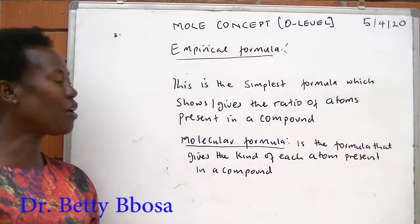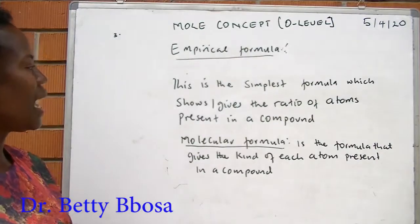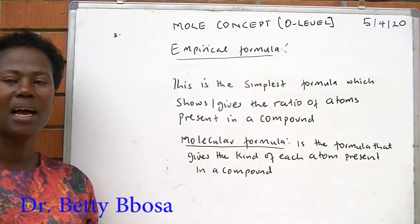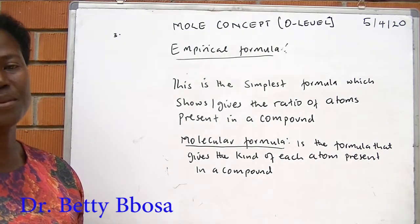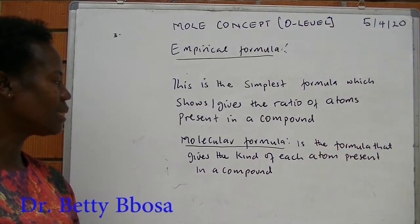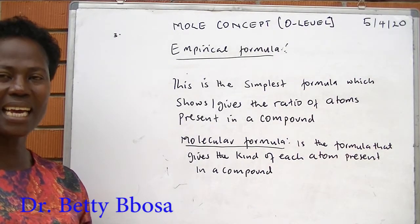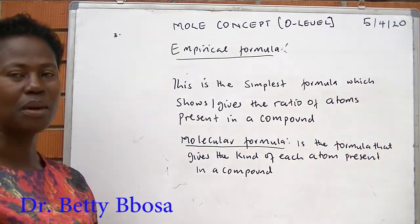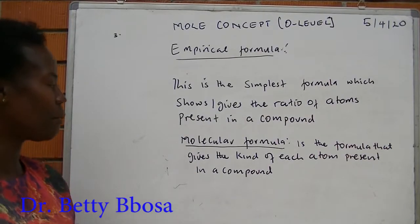Today we are going to look at the empirical formula and the molecular formula. An empirical formula is the simplest formula which shows or gives the ratio of the atoms present in a compound. While the molecular formula is the formula that gives the actual number of each atom present in a compound or in a molecule of a compound.